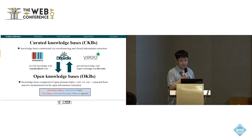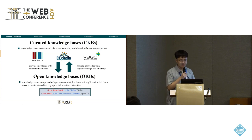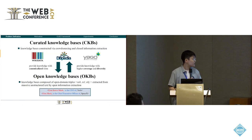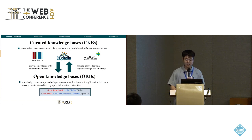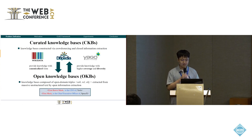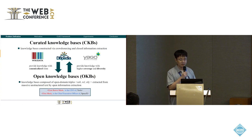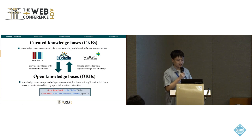In CKBs, each entity is canonicalized and well-defined with its unique identifier. However, the knowledge in CKBs is still far from complete, and the update of CKBs usually requires significant human involvement. In contrast, OKBs are composed of open domain triples extracted from massive unstructured web data by open information extraction techniques. Compared to CKBs, the coverage and diversity of OKBs are typically much higher. However, there is also more noise in OKBs due to the lack of unique identifiers of noun phrases and relation phrases in OKBs.